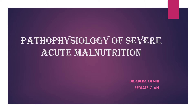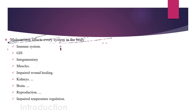Today's lesson is about the pathophysiology of severe acute malnutrition in pediatrics. Malnutrition affects almost every organ system — the immune system, gastrointestinal system, endocrine system, muscles, wound healing, kidney function, brain, reproduction, and temperature regulation.